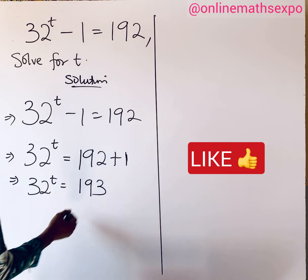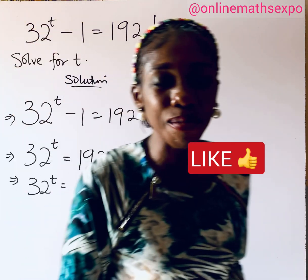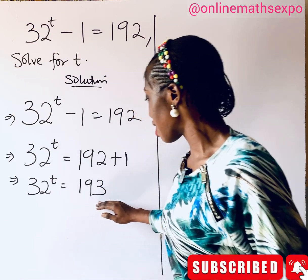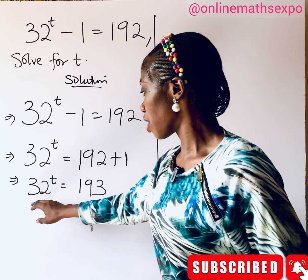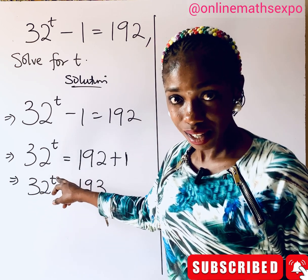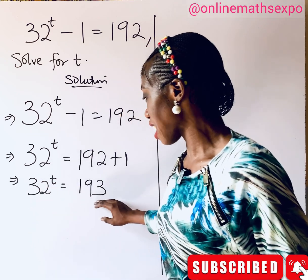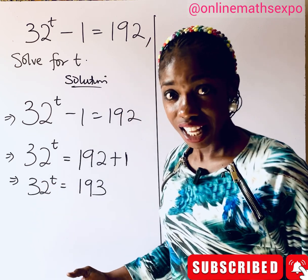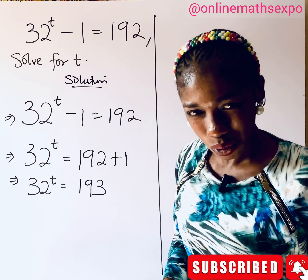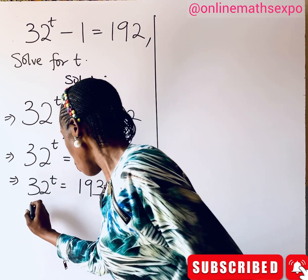This gives us 32 raised to the power of t equals 193. Now the question is: is there a possibility of expressing 193 in the same base as 32, so that we can easily find t? Is there any common base these two numbers can share? If the answer is no, you have to use logarithms.